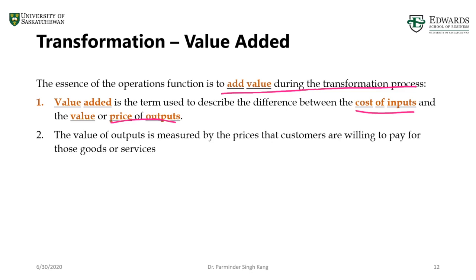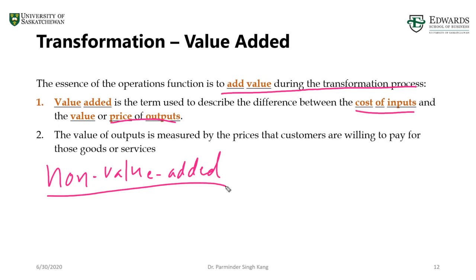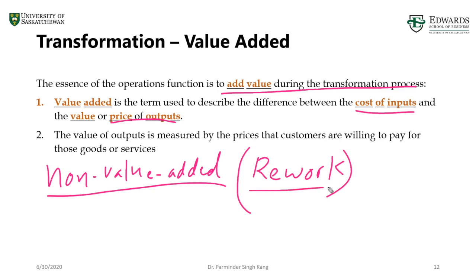I'd like to add one more term here that we'll come across a lot when we talk about lean management: non-value-added. Value is added during the transformation process, however there may be some activities such as rework — when work is not produced at the required quality the first time. For example, if you purchased a meal from McDonald's and asked for a Big Mac but they gave you a Junior Chicken, the customer needs to be served again — that's rework.